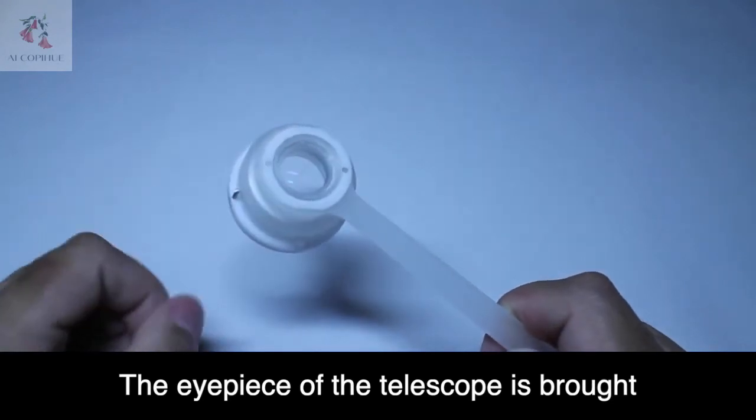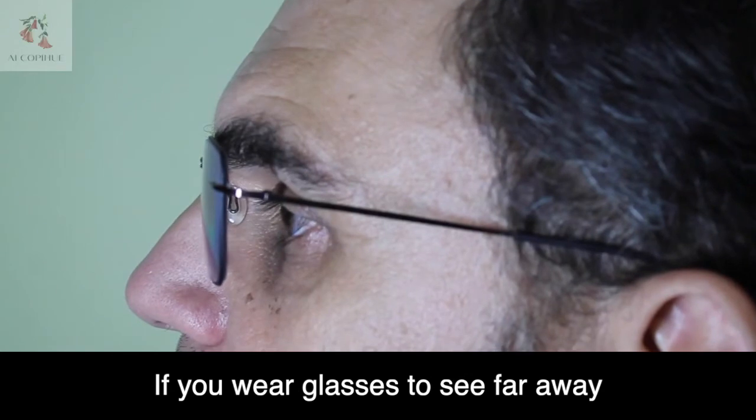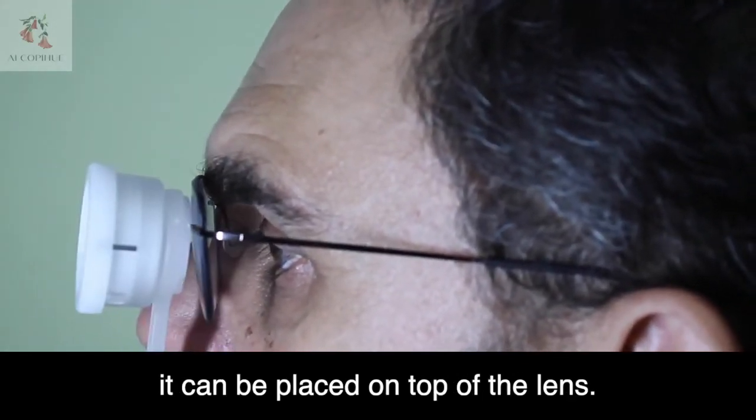The eyepiece of the telescope is brought as close to the eye as possible. If you wear glasses to see far away, it can be placed on top of the lens.